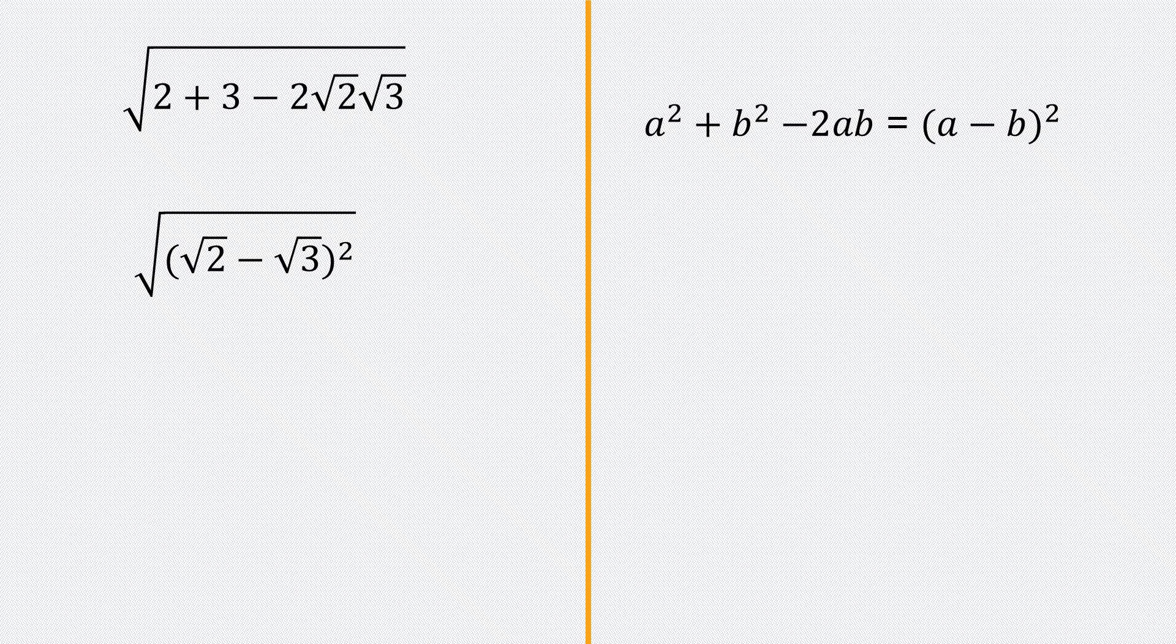And now we know the square root of a squared number is equal to the absolute value of that number. So the square root of x squared is equal to the absolute value of x. So we can rewrite this as the absolute value of root 2 minus root 3. Since root 3 is bigger than root 2, I have a negative.